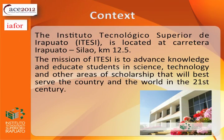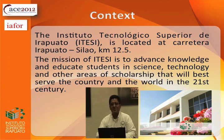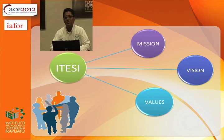Something about the context: the Instituto Tecnológico Superior de Irapuato, ITESI, is located at La Carretera Irapuato Silao, Kilómetro 12.5. The mission of ITESI is to advance knowledge and educate students in science, technology, and other areas of scholarship that will best serve the country and the world in the 21st century. The vision is focused on becoming the best option for students with a very good university education, and the values are based on the working group, developing skills, and working with the families of the students.